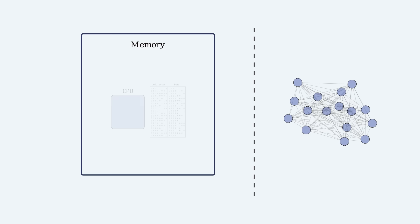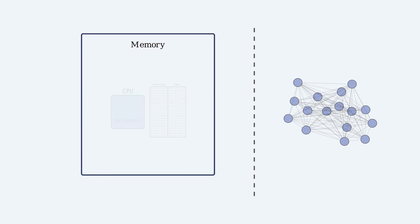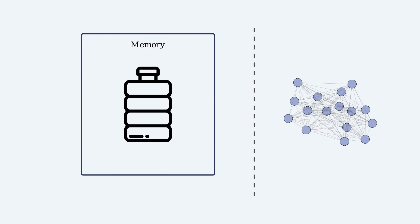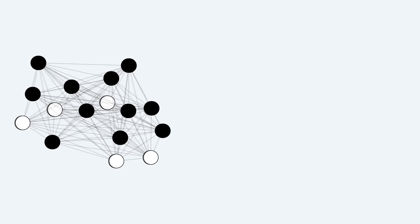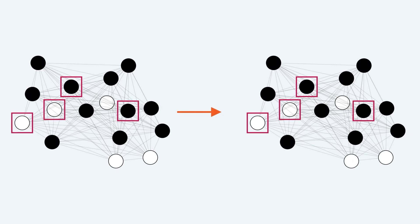Our computer memory has this property if we include the CPU. Our network seems different, so let's get creative. One thing that falls under our definition of memory might be a simple plastic bottle. If it's crushed — its configuration changed — it can sometimes return to its earlier state, which in that sense could be said to have been memorized. A neural network is a system with a pattern of activity that dynamically evolves. If we could construct our network such that it has some preferred state and would return to that state if perturbed, then that could reasonably be qualified as a memory.